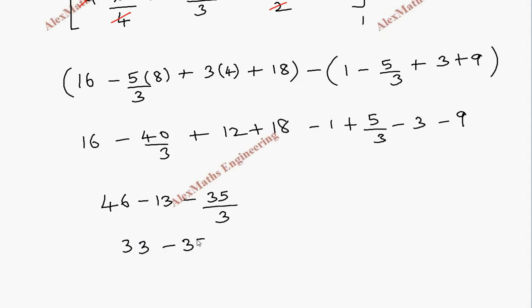Minus 35/3. Let's take LCM as 3, so this is 99 - 35. After subtraction we get 64/3.